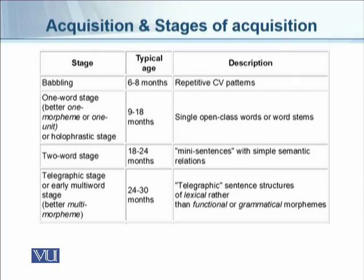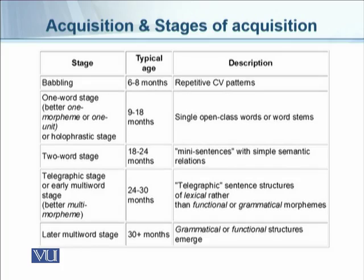The telegraphic stage, or early multi-word stage, runs from 24 to 30 months. Sentence structures at this stage are telegraphic — they contain lexical rather than functional or grammatical morphemes. Open-class content words such as verbs, nouns, and adjectives dominate, while functional morphemes like prepositions and conjunctions are fewer.